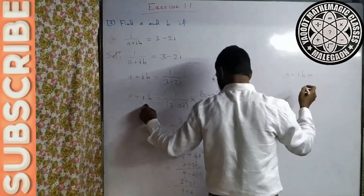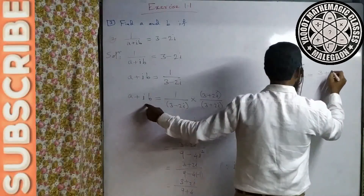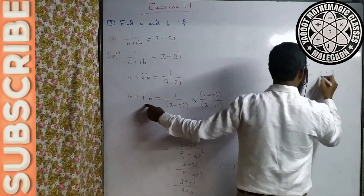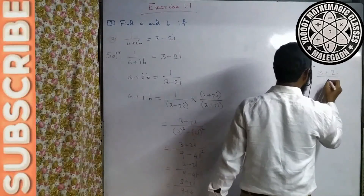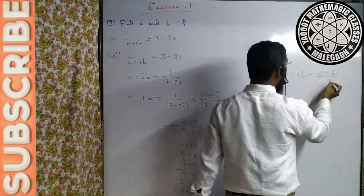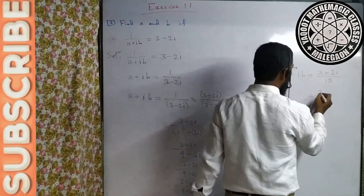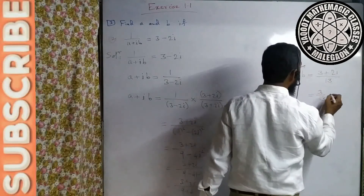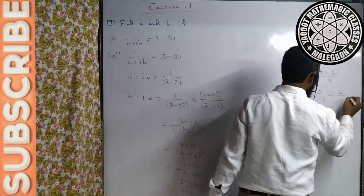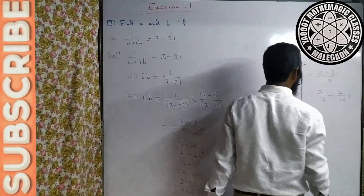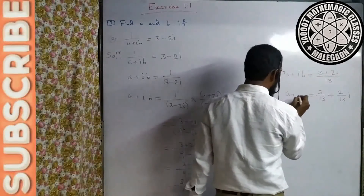That means aapka a plus ib bana hai: 3 plus 2i divided by 13. So a plus ib = 3/13 plus (2/13)i.